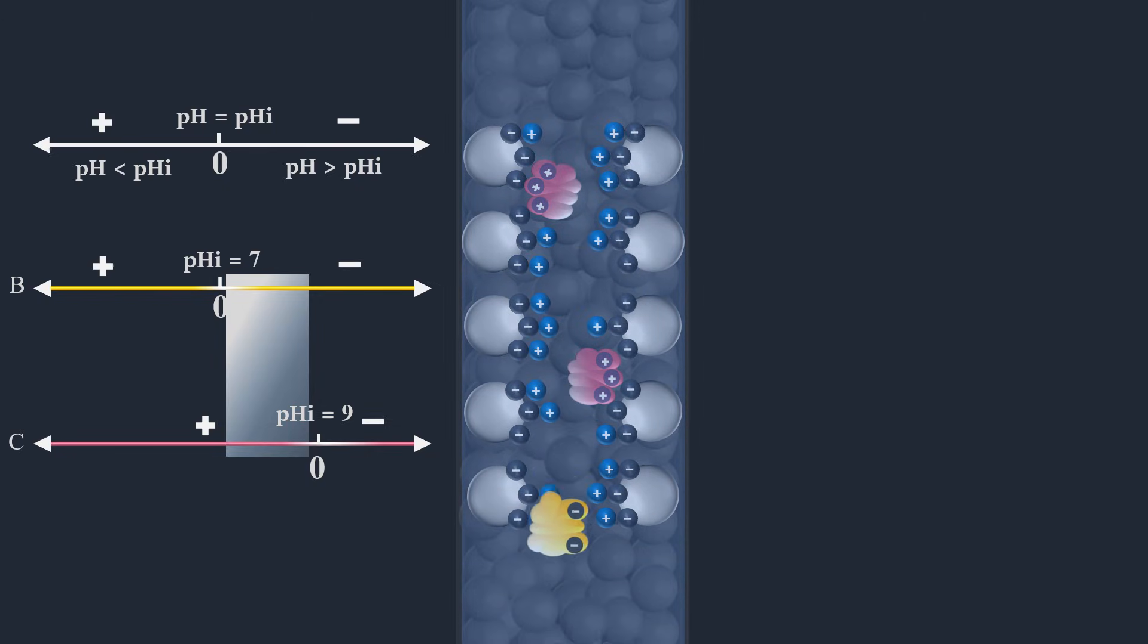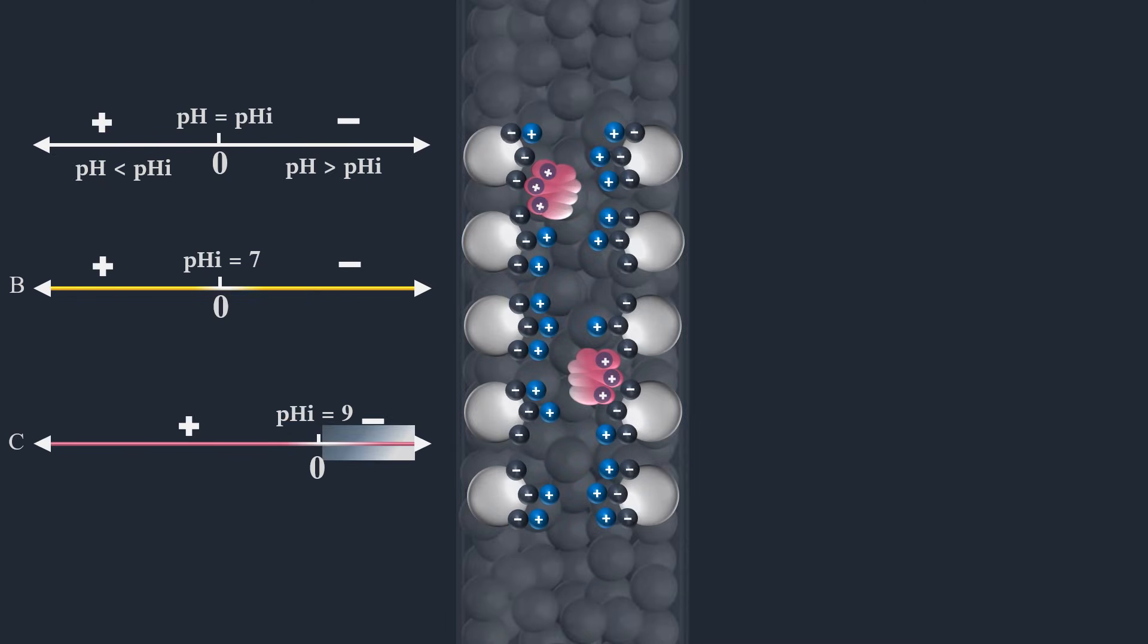Protein C is still charged positively, consequently still retained. Next, protein C can be eluted if we apply a buffer with pH above its isoelectric point. So it becomes negatively charged, and it will pass through the column.